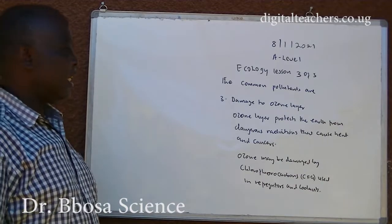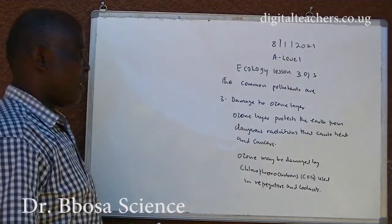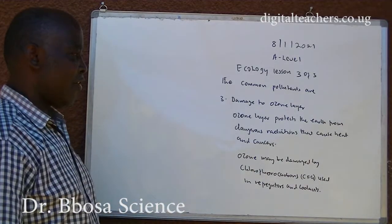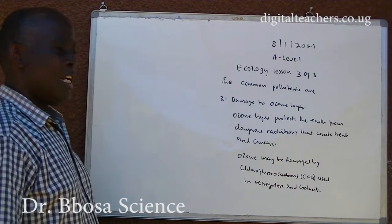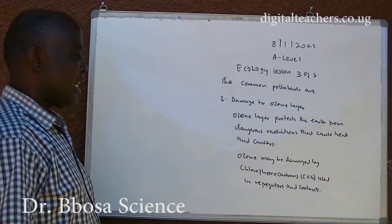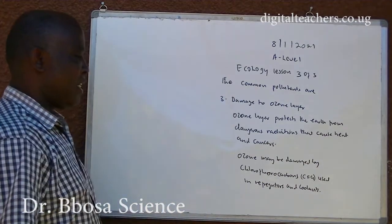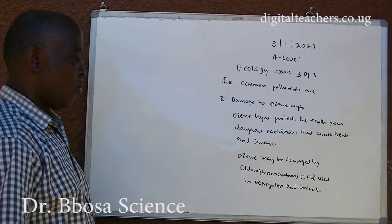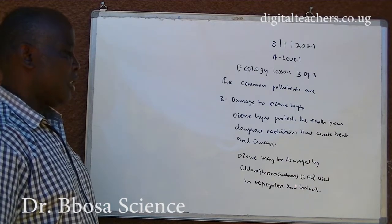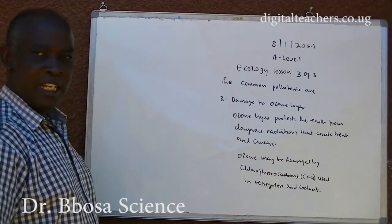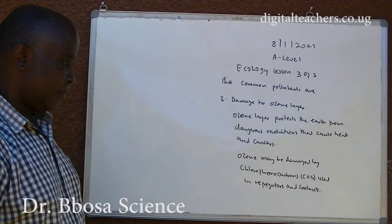Three: damaged ozone layer. The ozone layer protects the earth from dangerous radiations that cause heat and cancers. The ozone layer may be damaged by chlorofluorocarbons used in refrigerators and aerosols.